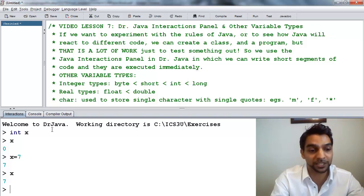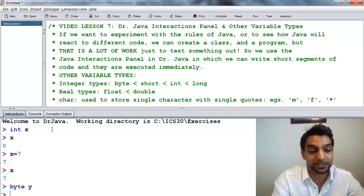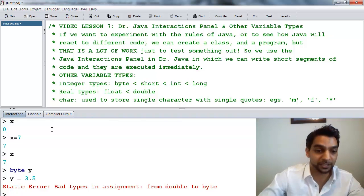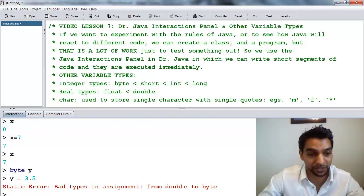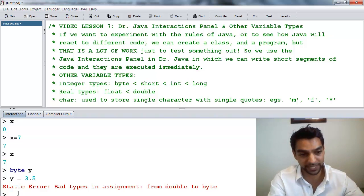The interactions panel is very cool for this kind of thing, just to test out things. Let's introduce ourselves to these other types of variables. Let's make another variable of type byte. Let's call this one y. Byte is, it's like an integer, so it's not allowed to store decimals. Let's try and put a decimal inside byte. Let's say 3.5. It says static error, bad types in assignment, from double to byte. It's trying to put a double variable with a decimal into a byte. Bytes, short, int, and long can only have numbers without decimals. No decimals are allowed there.